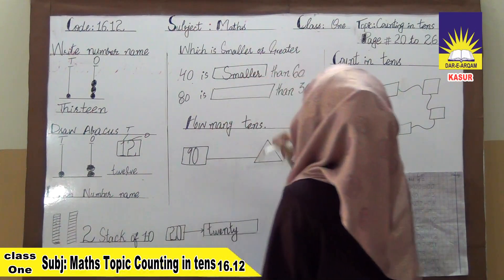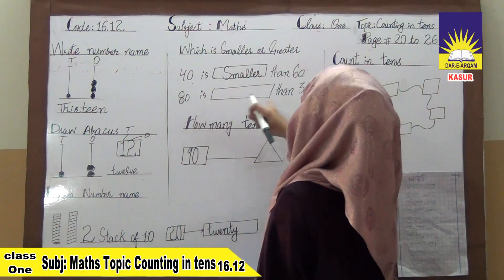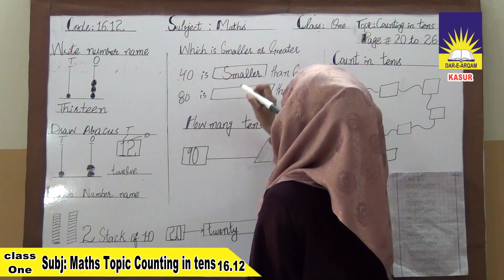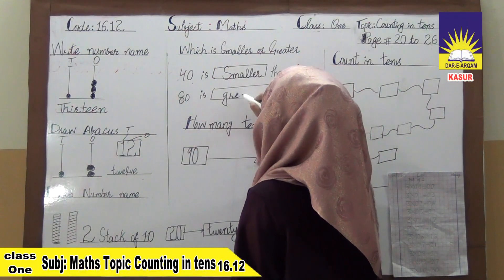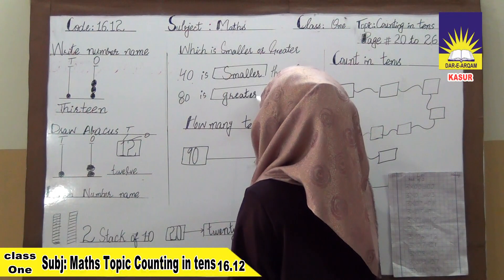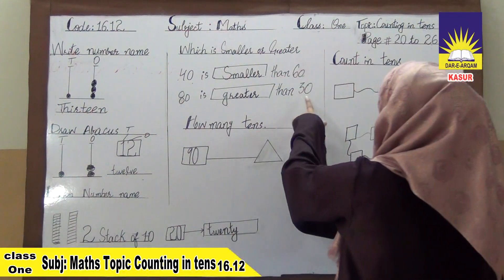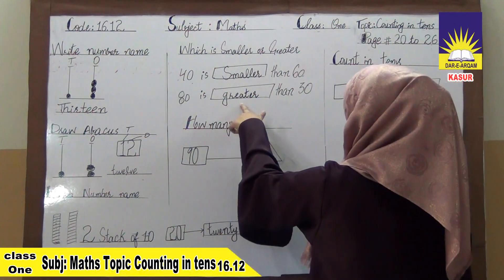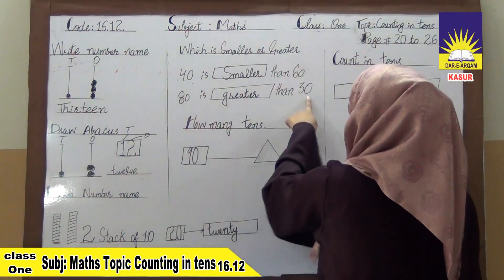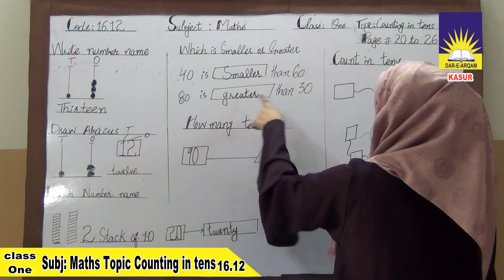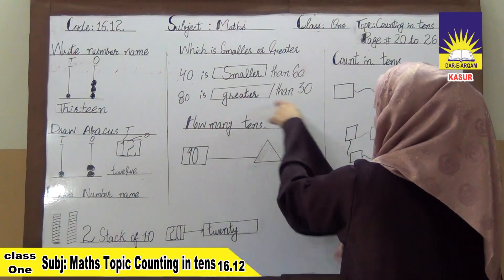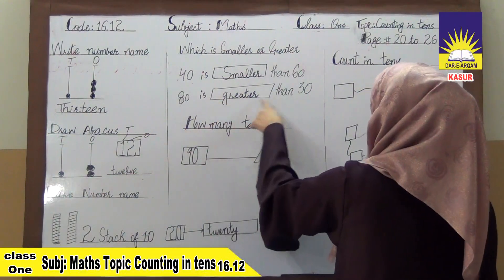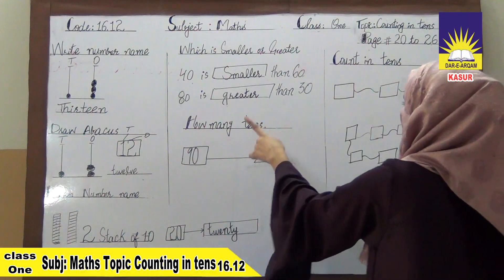And in this way, our opposite second one is 80 is dash than 30. So, 80 is greater than 30. Now, 80 is first and 30 is last. So, 80 is greater than 30. If we read this sentence, 80 is greater than 30 which is correct.